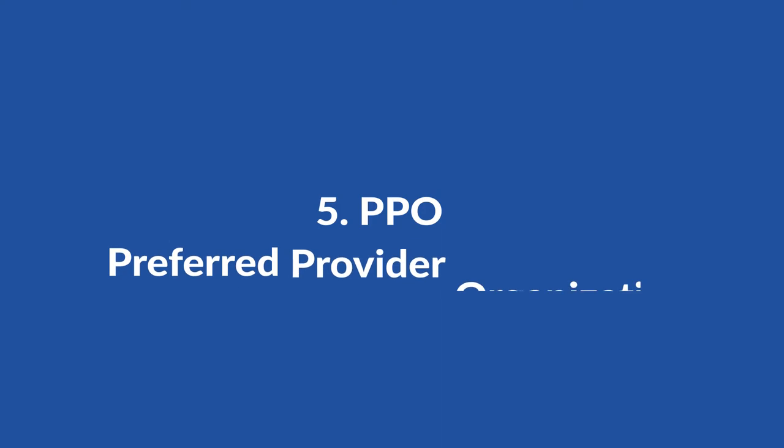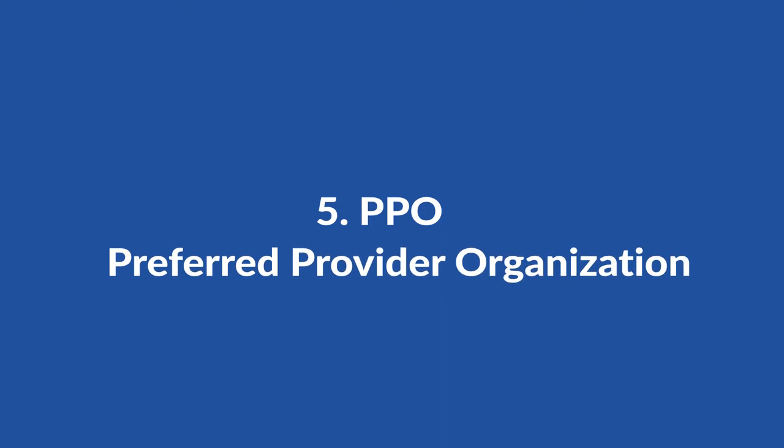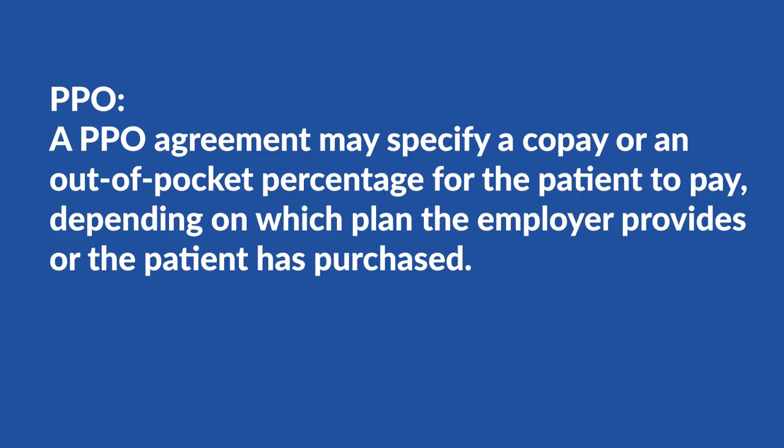Number five: PPO, Preferred Provider Organization. For this type of insurance, patients typically have a choice of going to an office that's in-network or out-of-network. A PPO agreement may specify a copay or an out-of-pocket percentage for the patient to pay, depending on which plan the employer provides or the patient has purchased.